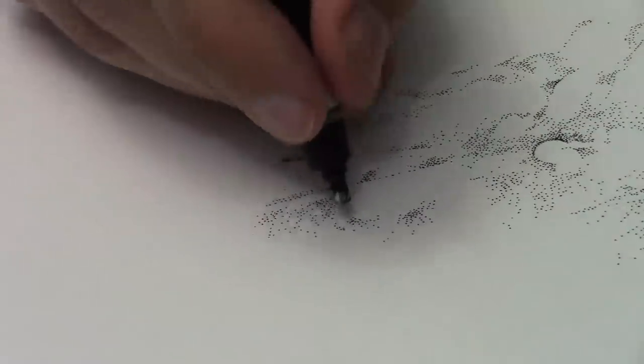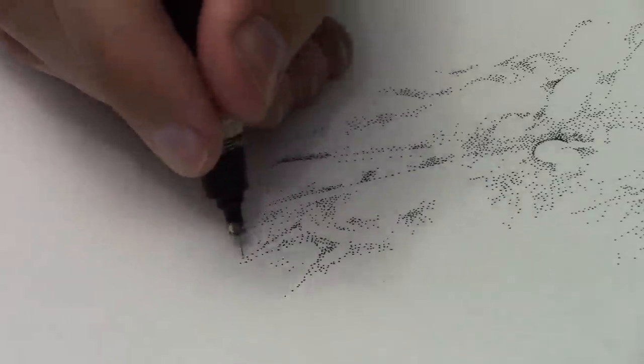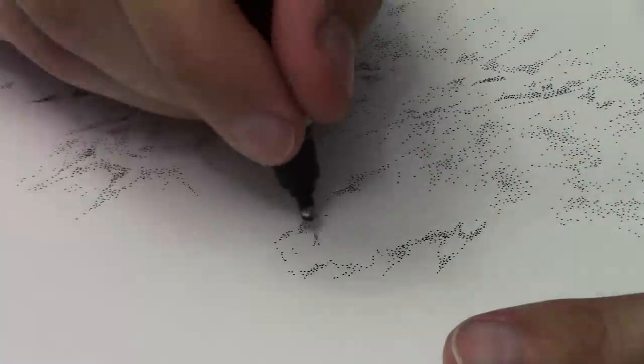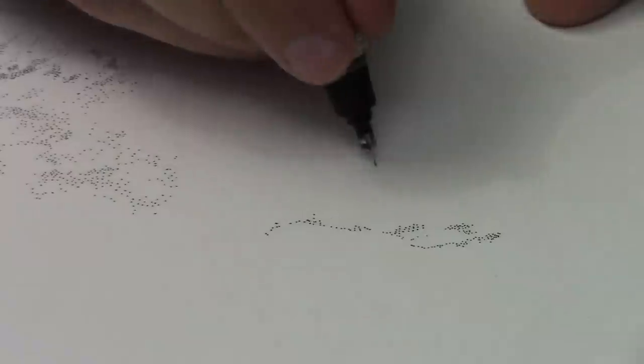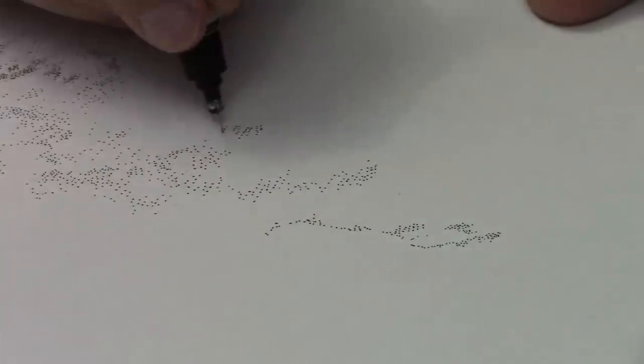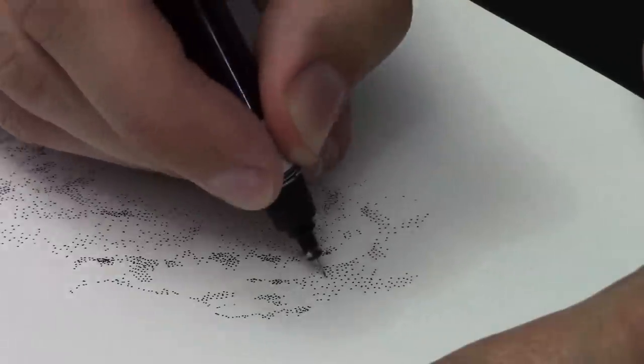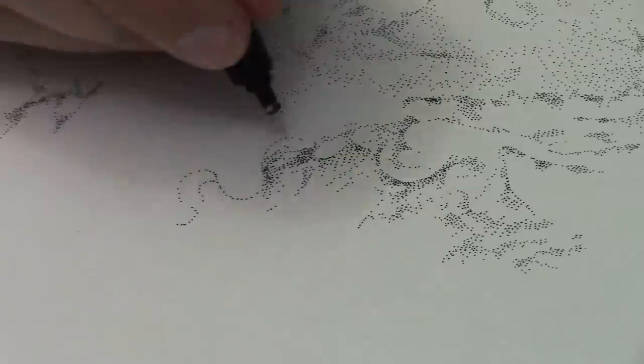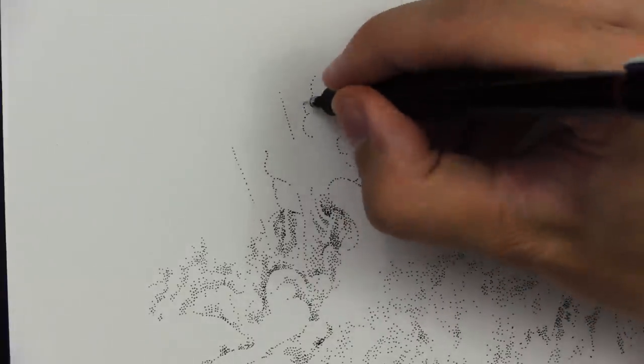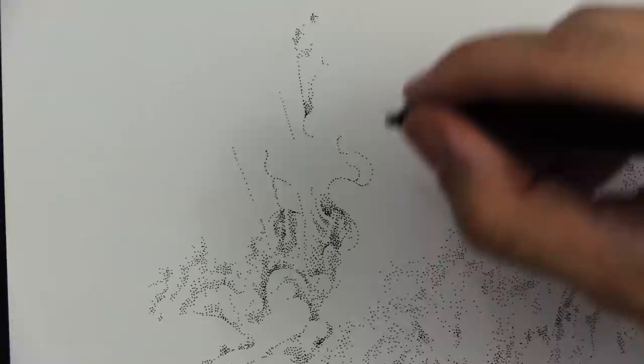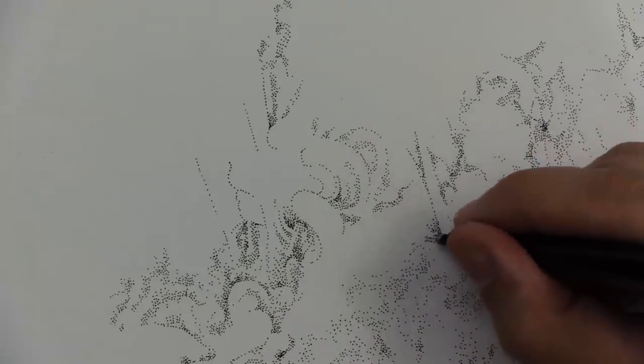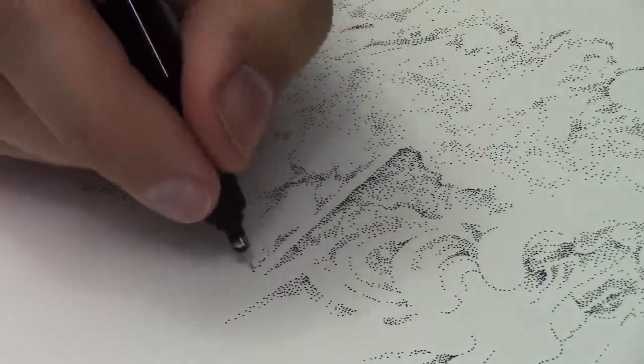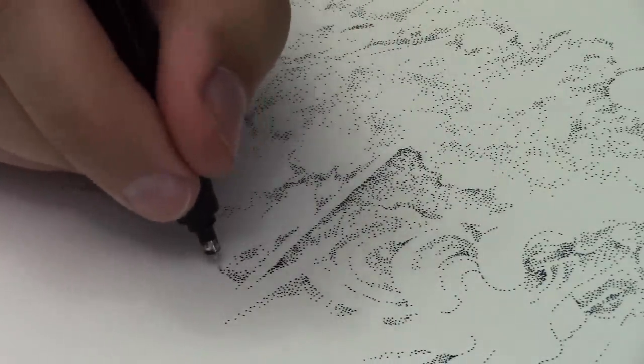You can take your time with it, dot by dot, you can create varying degrees of solidity as some say. When you put a bunch more dots closer together, it creates a darker area. I typically use black ink on white paper, pretty classic straightforward approach, but you can mix it up as you see fit.